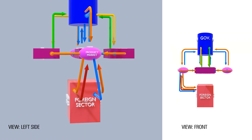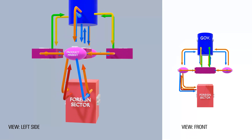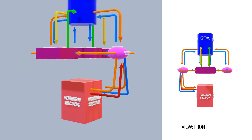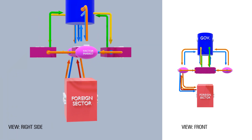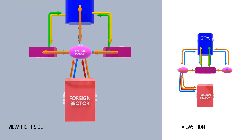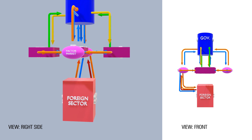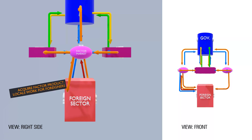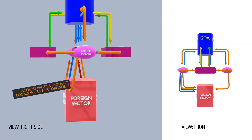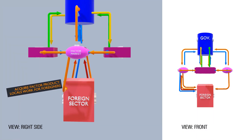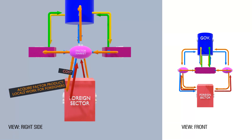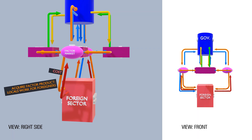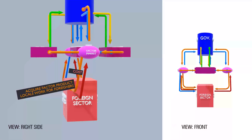Aside from the product market, the rest of the world may also participate in the factor market. For example, a foreign business may want to outsource animators from the local country — the animators will need to be paid in foreign currency, directly or indirectly.